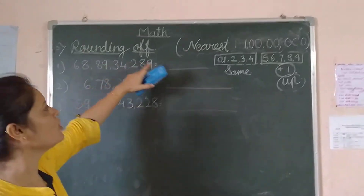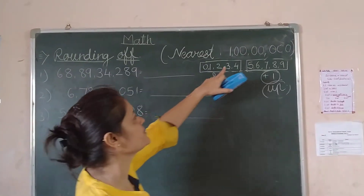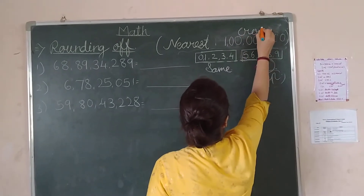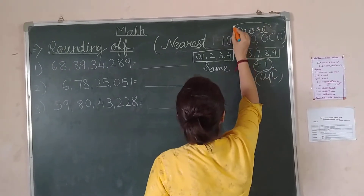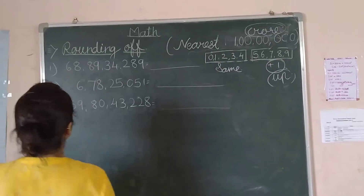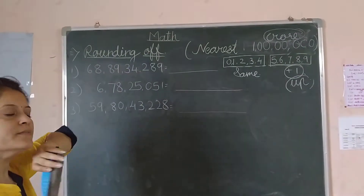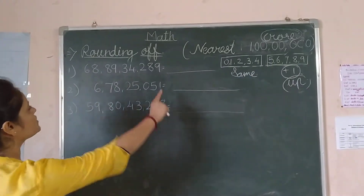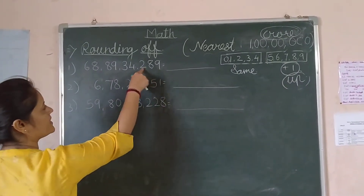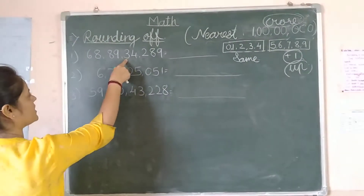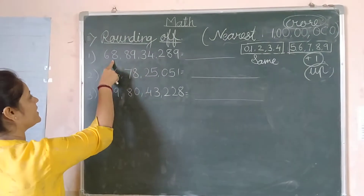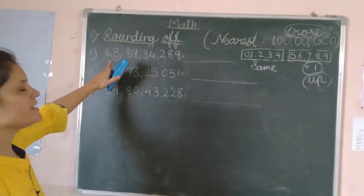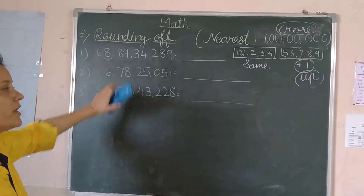Now we will see rounding off to the nearest crore. So the first step is we will identify our crore digit. Let us see: ones, hundreds, thousands, ten-thousands, lakhs, ten-lakhs, and crore. The digit in the place of crore is 8.